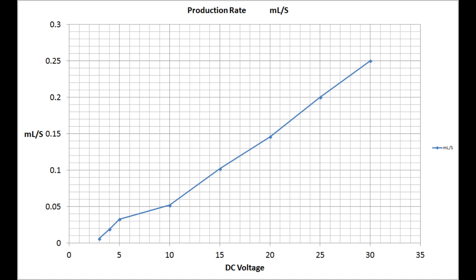So this graph shows the production rate in millilitres per second, and that's covering the voltage range of 3 volts to 30 volts. I did carry out trials at 2 volts, but I couldn't get any production at all. I had no gas production at 2 volts whatsoever.